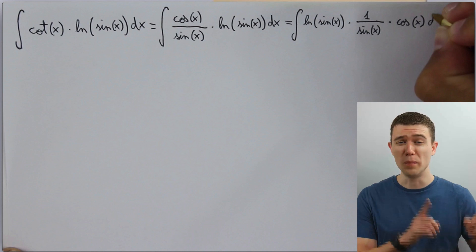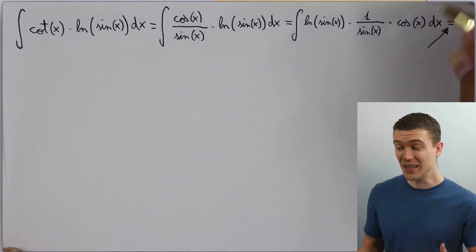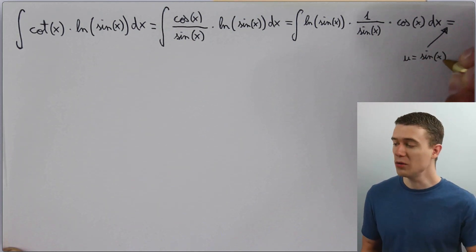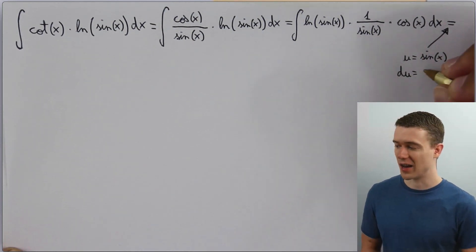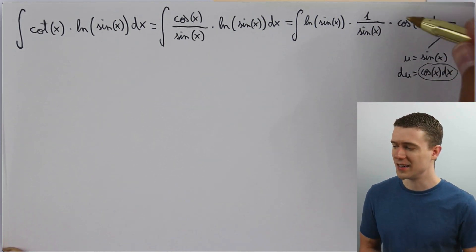You might be able to see that if you pick u to be sine, well, the du, the derivative of sine, is cosine. And so that factor of cosine, that's going to cancel out. So this is our substitution. u is sine x, du is cosine x dx.